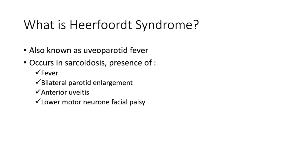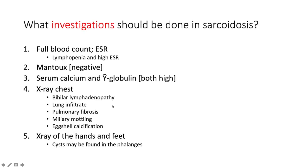Heerfordt syndrome is defined by four features: fever, bilateral parotid enlargement, anterior uveitis, and a lower motor neuron seventh nerve (facial nerve) palsy.